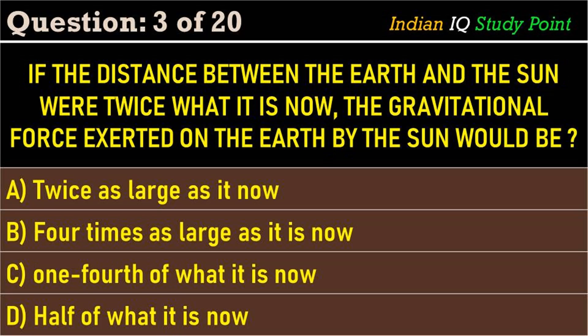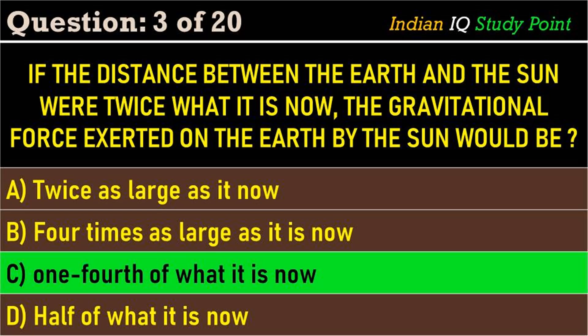Coming to the next question: if the distance between the earth and the sun were twice what it is now, the gravitational force exerted on the earth by the sun would be — option A: twice as large as it is now. Option B: four times as large as it is now. Option C: one fourth of what it is now. Option D: half of what it is now. The correct answer is option C: one fourth of what it is now.